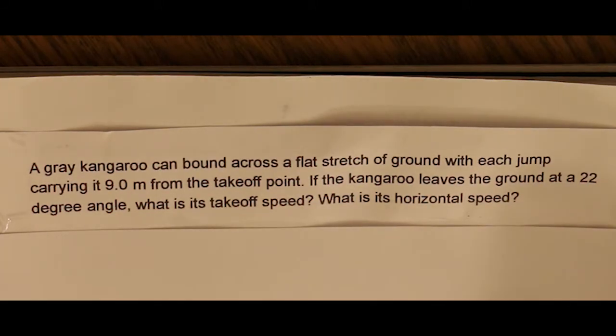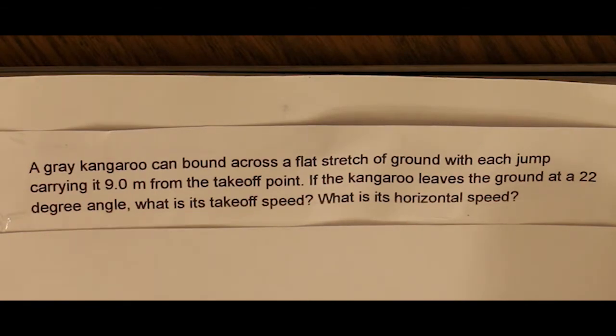A gray kangaroo can bound across a flat stretch of ground with each jump carrying it nine meters from the takeoff point. If the kangaroo leaves the ground at an angle of 22 degrees, what is its takeoff speed and what is its horizontal speed?